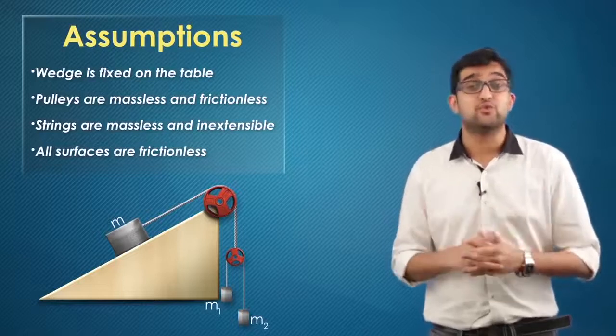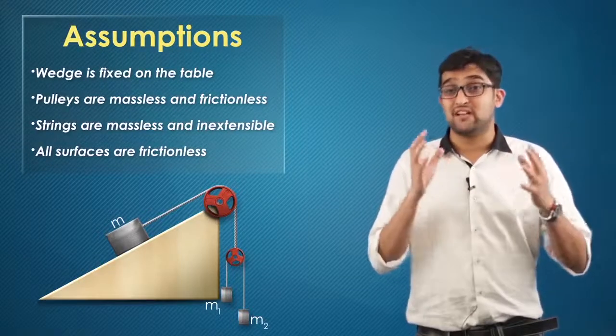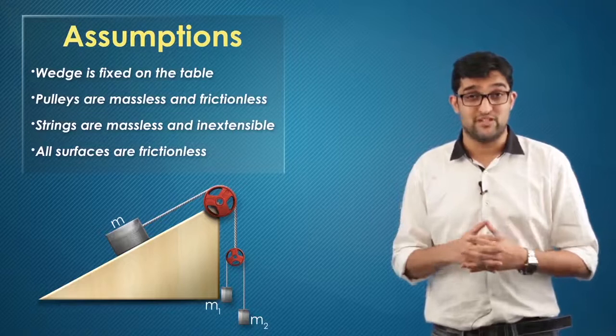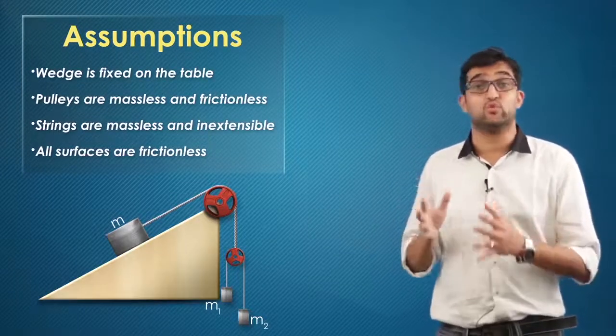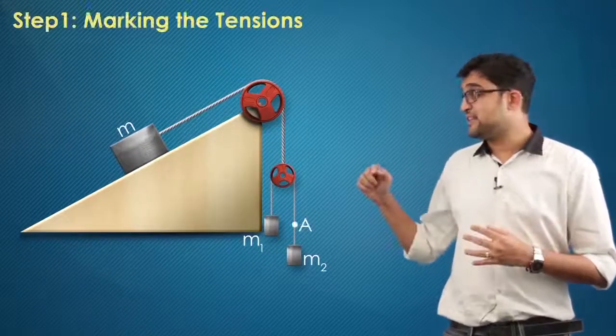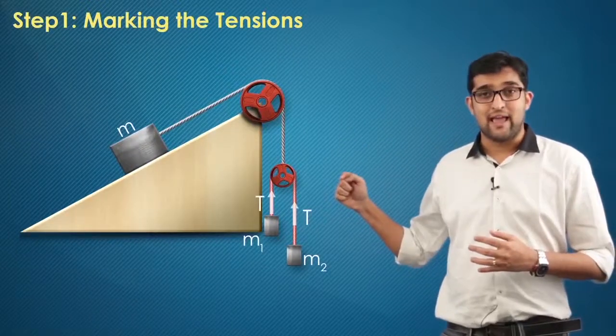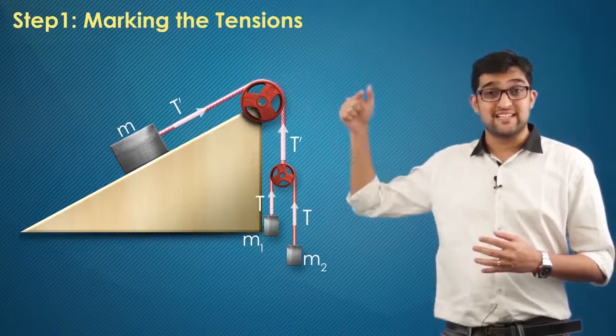To solve, the first thing we need to do is mark out various physical variables in the problem, which is nothing but the accelerations of the bodies and the tensions of two separate strings. At A, I am putting tension T, and T' to the second string here.